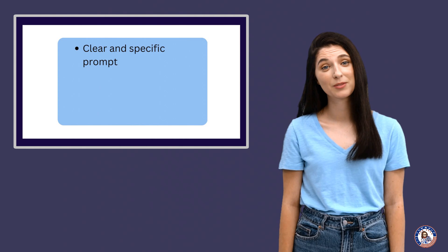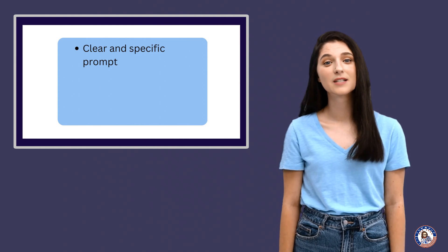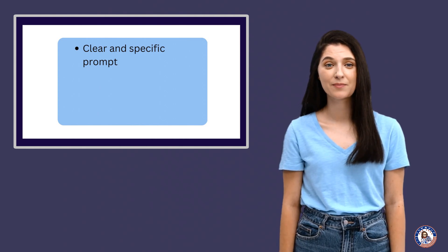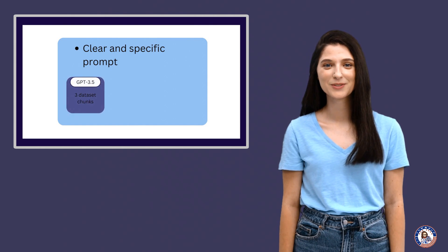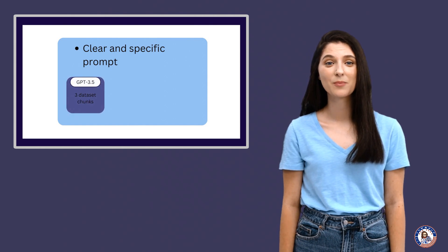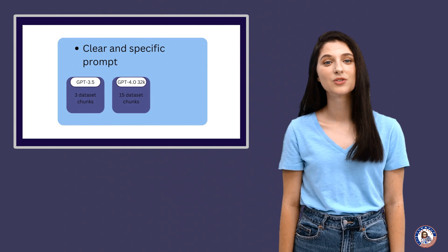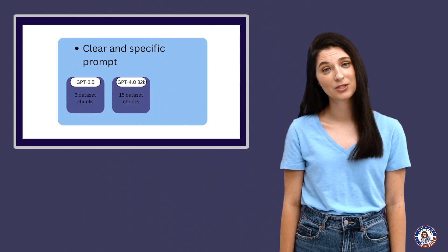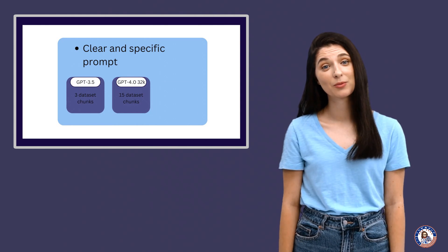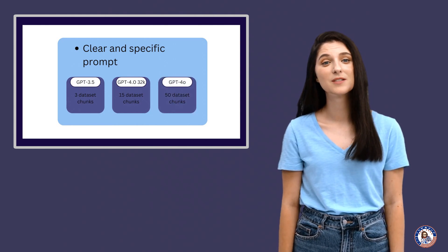Model selection determines how many data chunks are pulled into the context window. For example, GPT 3.5 pulls 3 chunks, GPT 4.0 32K pulls 15 chunks, and GPT 4.0 pulls 50 chunks.